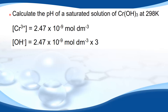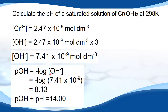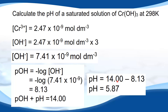In the next part we calculate the pH of a saturated solution of chromium hydroxide at 298 K. We have just calculated the concentration of chromium ions as 2.47 × 10⁻⁹ mol dm⁻³. To calculate the concentration of OH⁻ ions we multiply by 3, because for every 1 chromium ion there are 3 hydroxide ions, giving a hydroxide ion concentration of 7.41 × 10⁻⁹ mol dm⁻³. The pOH equals the negative log of 7.41 × 10⁻⁹, which is 8.13. Since pOH + pH = 14.00 at 298 K, the pH equals 14.00 − 8.13 = 5.87.